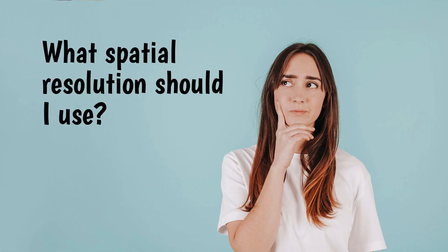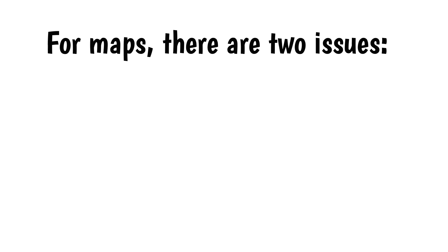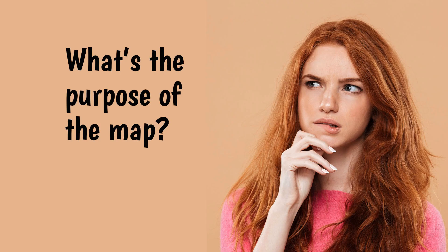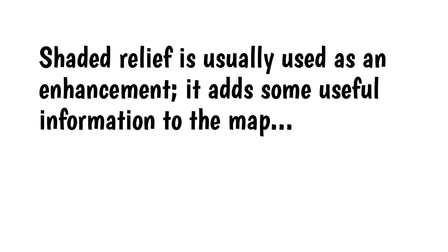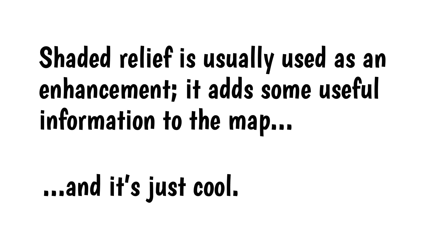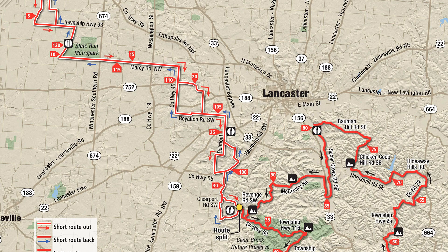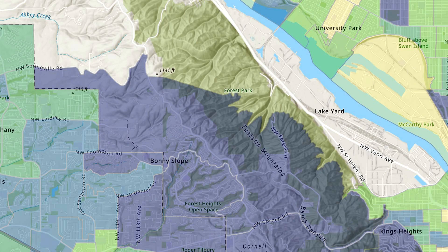What spatial resolution should I use? The ideal spatial resolution depends on several factors. If you need the data for a specific scientific purpose, that will determine the resolution you need. For maps, there are two issues: the map's purpose and its area of coverage. The purpose of your map — the key information you're trying to convey to the reader — is the first consideration when choosing an ideal level of detail. Shaded relief is usually used as an enhancement; it adds useful information and, let's be honest, it's just cool. Many maps benefit from showing relief, but they usually don't need to show every individual mountain or valley. In maps for hiking or mountain biking, the terrain is the whole point of the map, so a higher level of detail is justified. Maps featuring environmental issues can also benefit from greater detail.